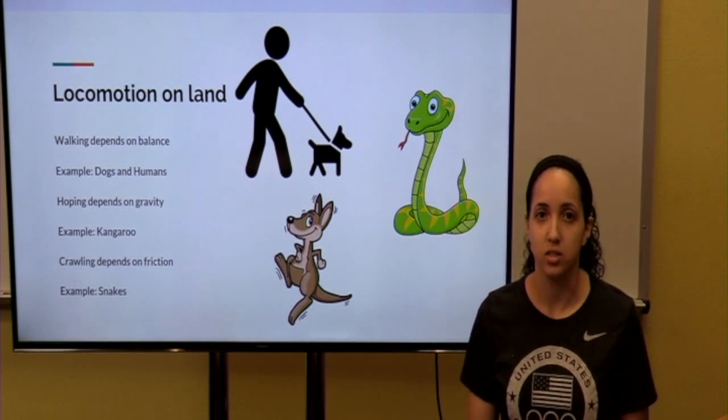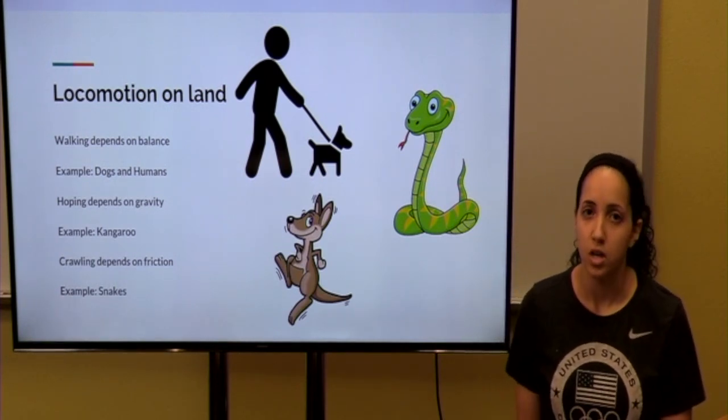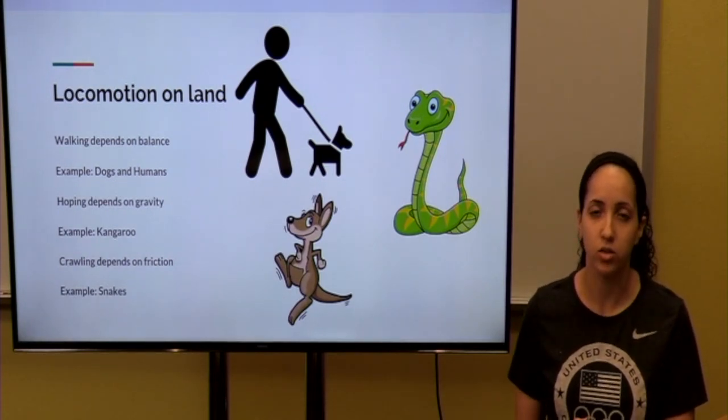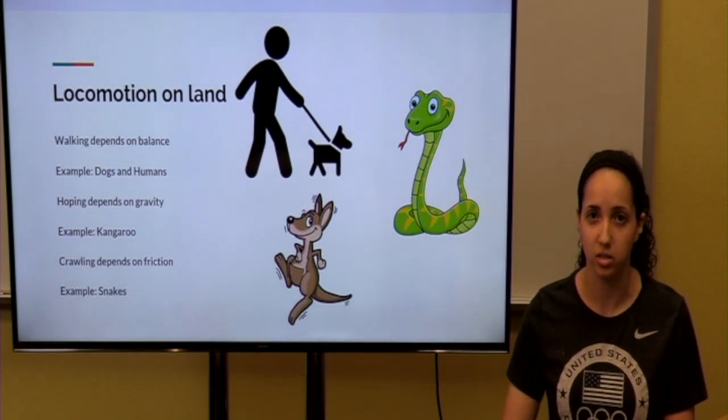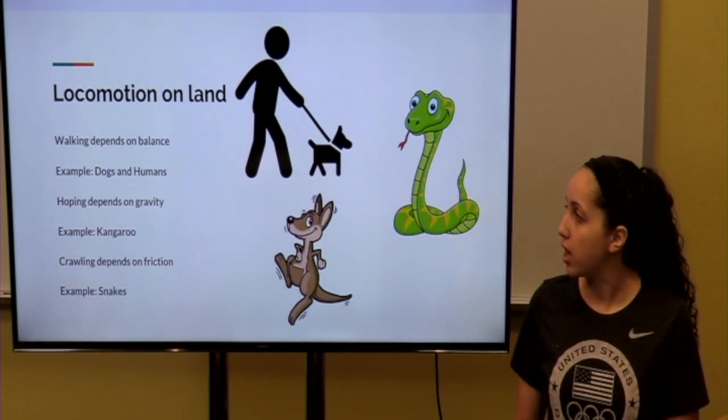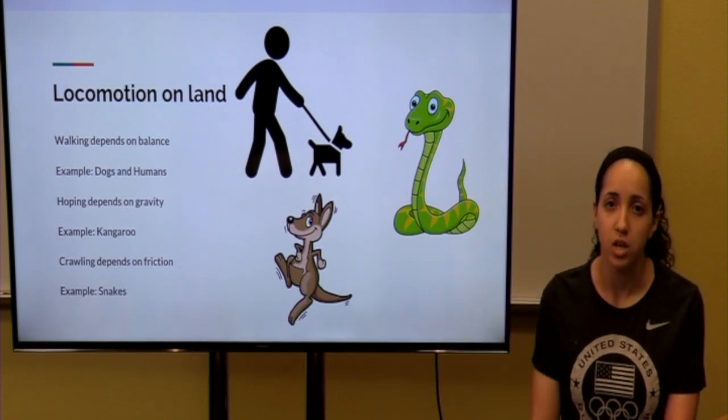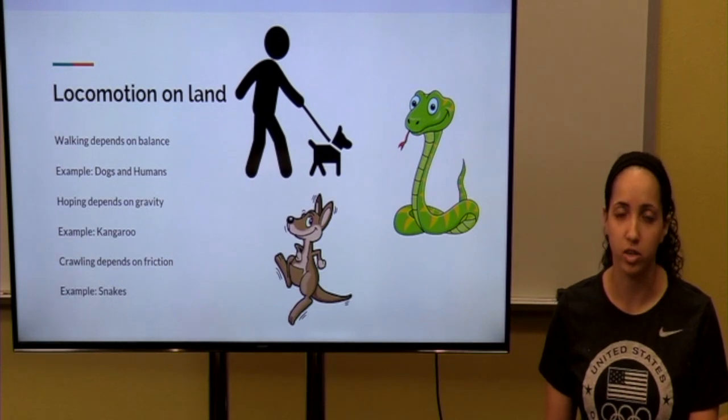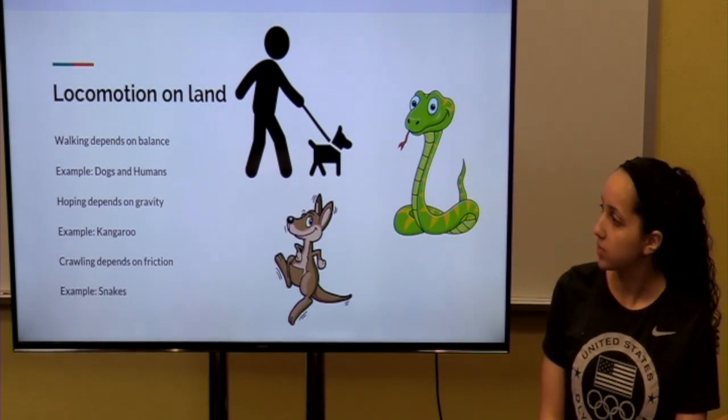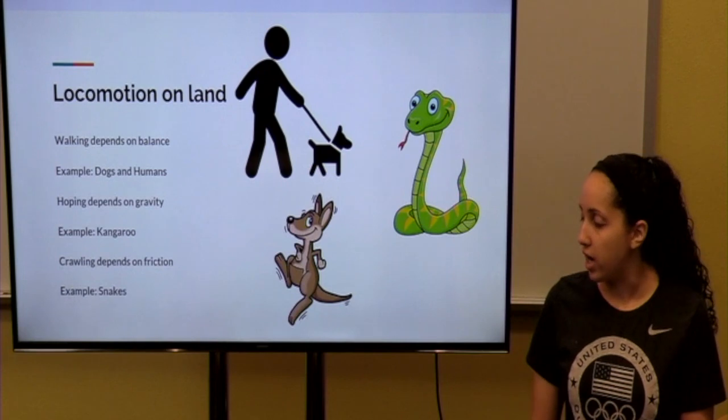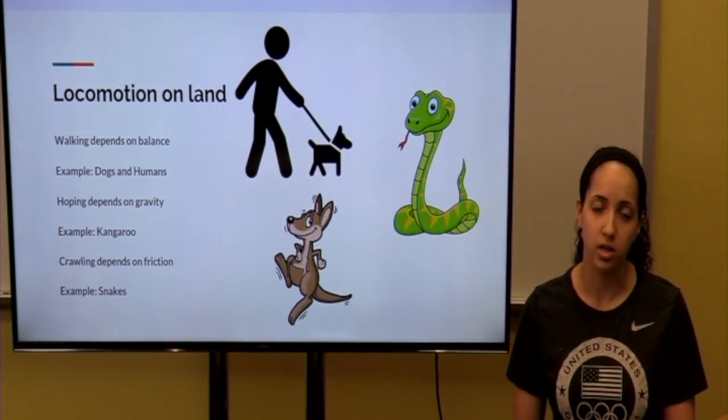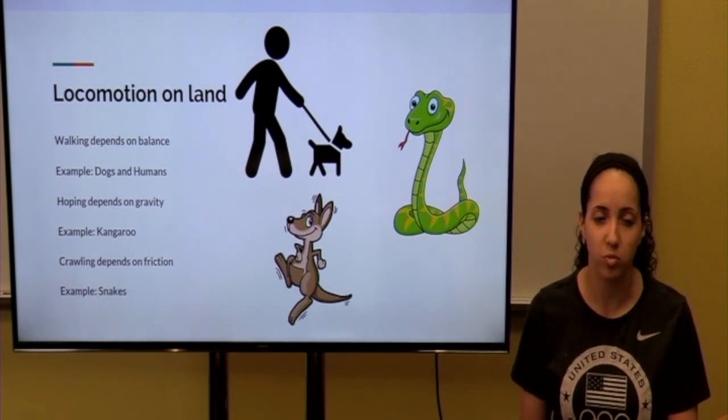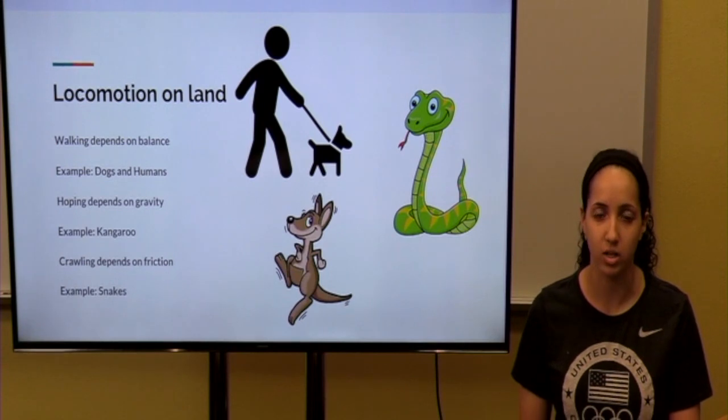Locomotion on land consists of walking, hopping, or crawling. Humans and dogs walk, and their locomotion is affected by balance, their ability to balance. Hopping depends on gravity. Kangaroos hop a lot, so they have to have strong muscles in their hind legs to allow them to fight the gravity that would be holding them down. Lastly, we have an example of snakes, which crawl, and crawling is affected by friction. So, snakes have scales that smoothen out their bodies and allows them to move more efficiently without as much friction.